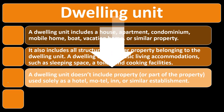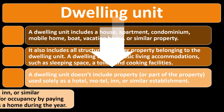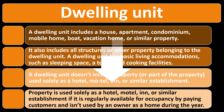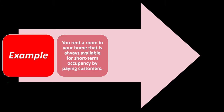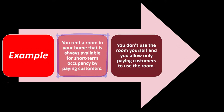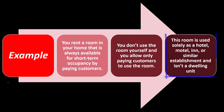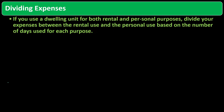A dwelling unit doesn't include property used solely as a hotel, motel, inn, or similar establishment. Property is used solely as a hotel or similar establishment if it is regularly available for occupancy by paying customers and isn't used by an owner as a home during the year. For example, if you rent a room in your home that is always available for short-term occupancy by paying customers, you don't use the room yourself, and only paying customers use it — that room is used solely as a hotel or similar establishment and isn't a dwelling unit.